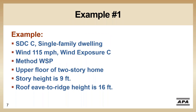Jumping right into our first example. This is the second story of a home. Example two is going to be the first story of the same house. We're seismic design category C, single family dwelling, ultimate wind speed of 115 miles per hour, wind exposure C. We're going to choose method wood structural panel — which can be plywood or OSB. This is the upper of a two-story. Our story height is nine feet and our roof eave to ridge height is 16 feet.